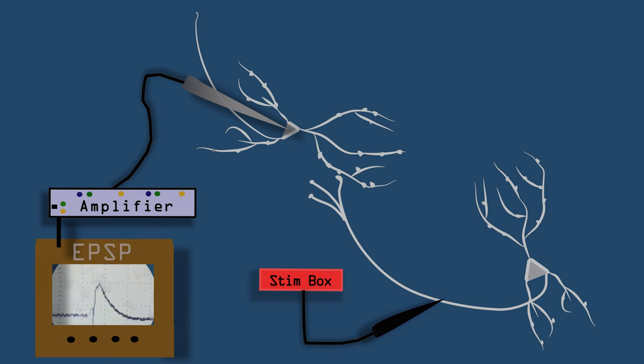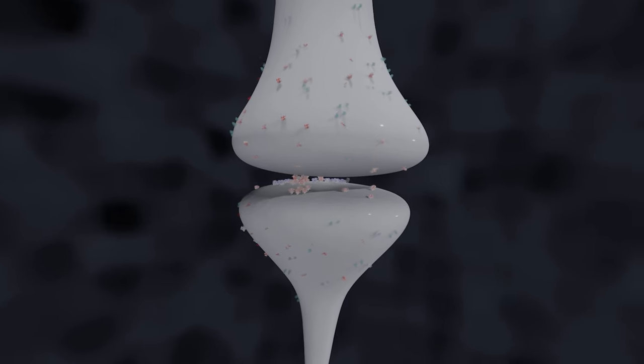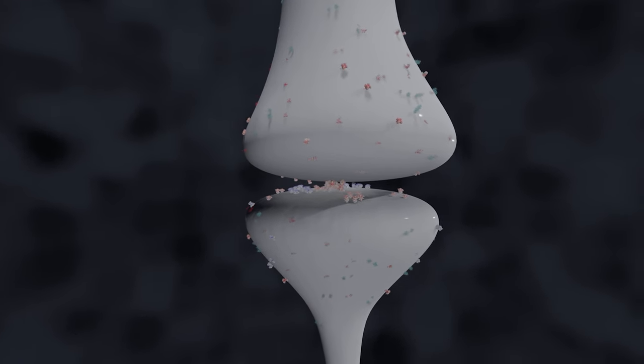We apply current and induce an action potential. On the postsynaptic cell, we record the synaptic response, called excitatory postsynaptic potential, or EPSP. Ion channels and receptors transmit the signals. The amount and location of receptors in the synapse is dynamically regulated and determines the strength of the connection.